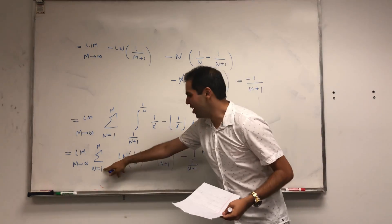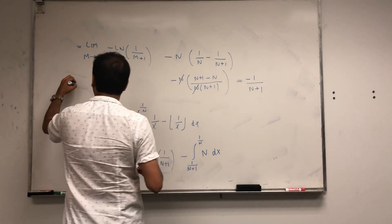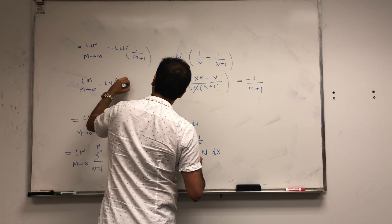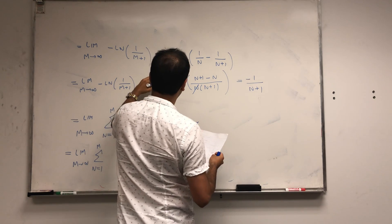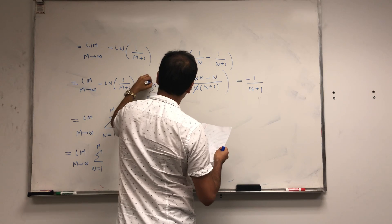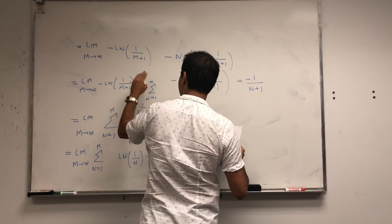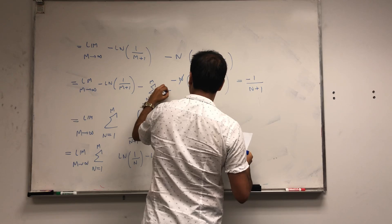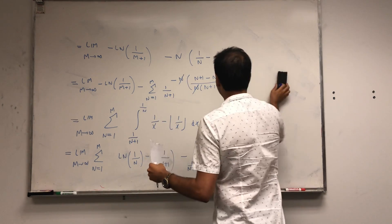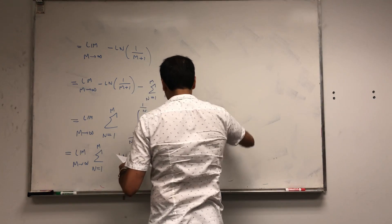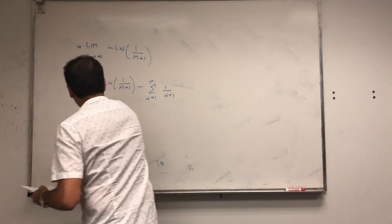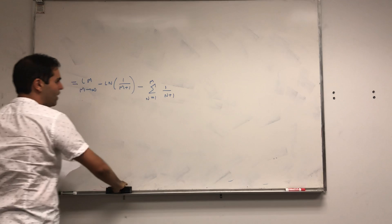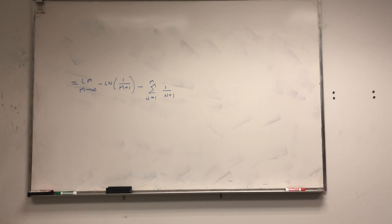So each chunk becomes minus 1 over n plus 1. And because you're summing everything, the whole thing then becomes limit m goes to infinity of minus ln of 1 over m plus 1 minus the sum from n from 1 to m of 1 over n plus 1. Which is very nice. You took this huge integral and transformed it into a series almost.